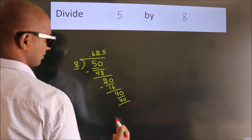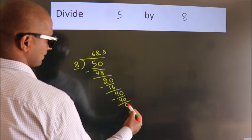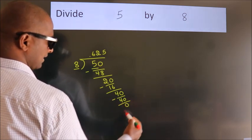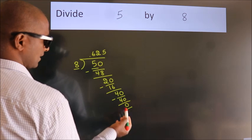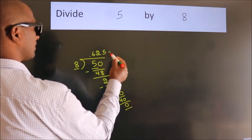Now we subtract. We get 0. Here we got remainder 0, so this is our quotient.